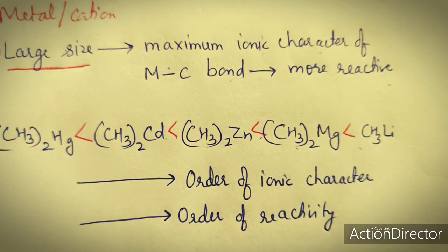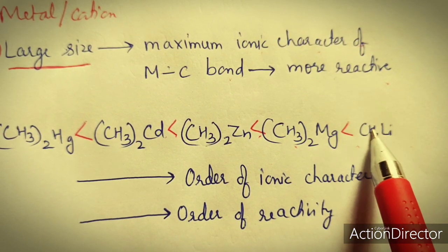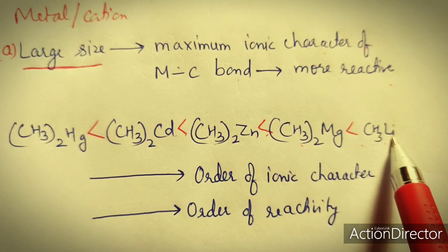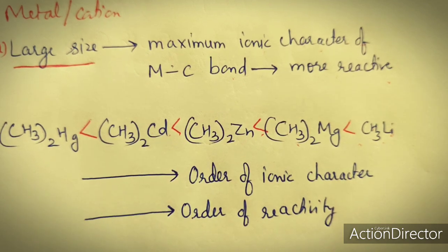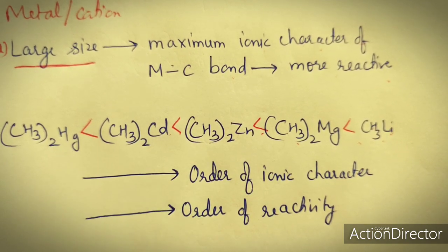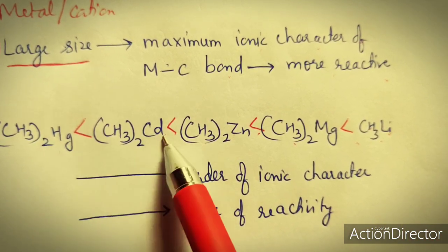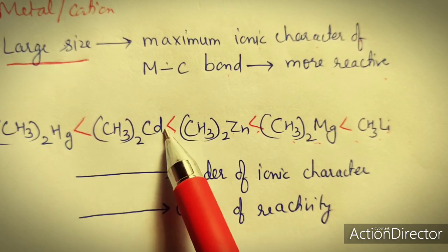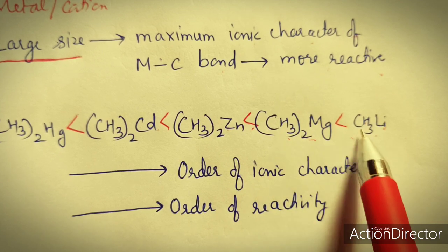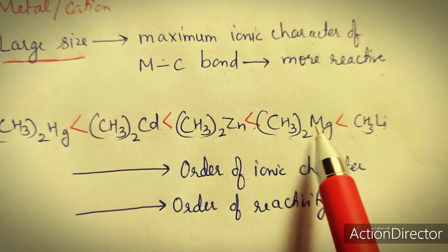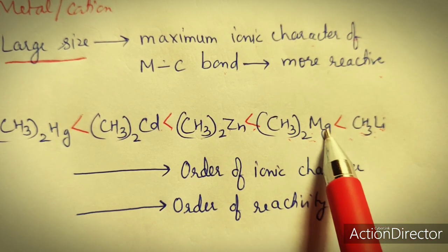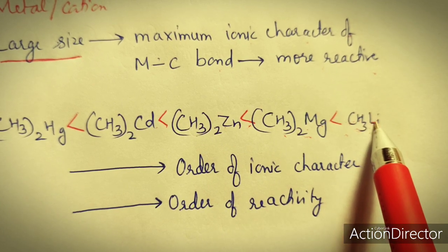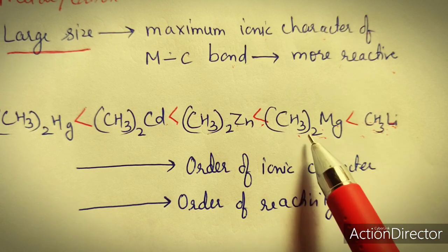Consider the series: dimethyl mercury, dimethyl cadmium, dimethyl zinc, dimethyl magnesium, and methyl lithium. The most reactive organometallic compound will be methyl lithium because the size of Li⁺ is large compared to Mg²⁺. Zn, Cd, and Hg are compared here because their d orbitals are filled, so they act like S and P block elements. The Li⁺ ion is larger in size compared to Mg²⁺, so the C–Li bond will be more ionic and more reactive. Thus CH₃Li will be less stable compared to the others in this series.